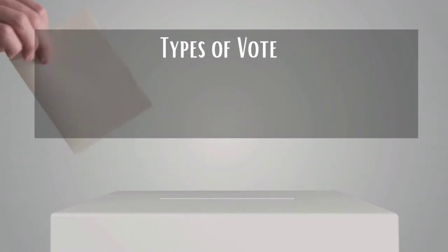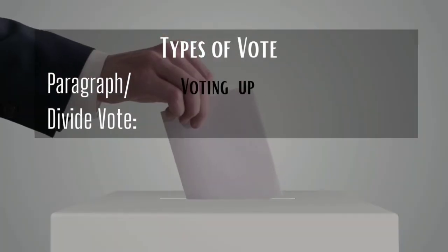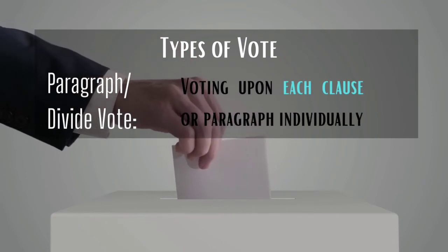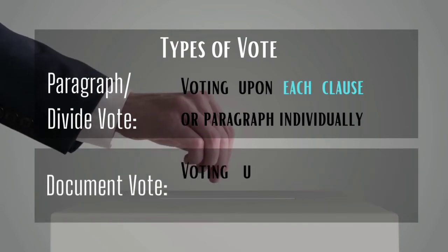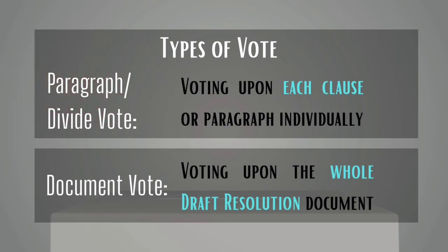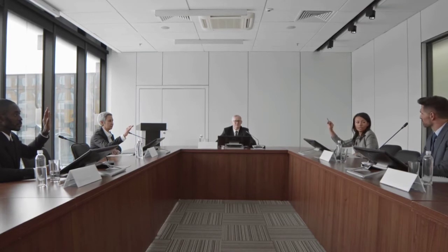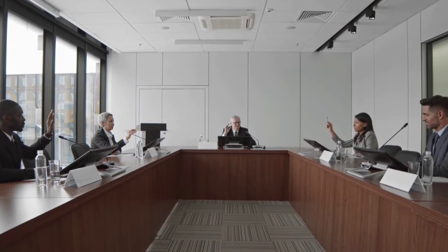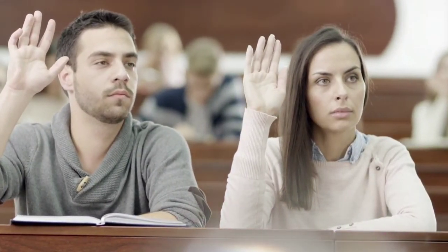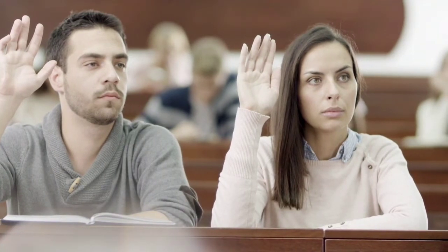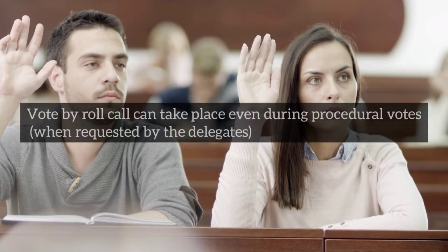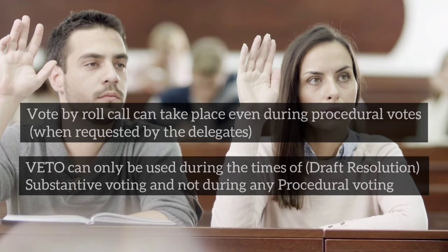There are two methods of presenting and voting. The first is the paragraph vote, divide vote, or division of proposal, which involves reading a document by each paragraph or clause and voting upon each clause individually. The second is the document vote, which involves a combined vote on the document as a whole. Generally, voting on procedural matters happens as the committee dais calls out yes or no as delegates raise their placards. Voting on substantive matters happens as the committee dais takes a roll call and each delegate responds with yes, no, or abstain. Delegates can also raise a motion to move into a vote by roll call even for certain procedural votes such as the moderated caucus. It is important to note that the veto power can only be used during a vote for the draft resolution and not during any procedural matters.